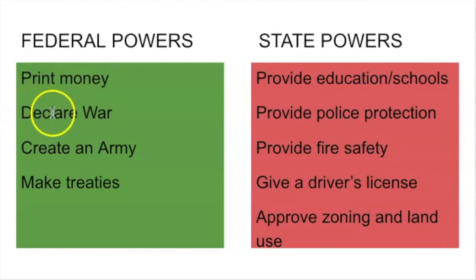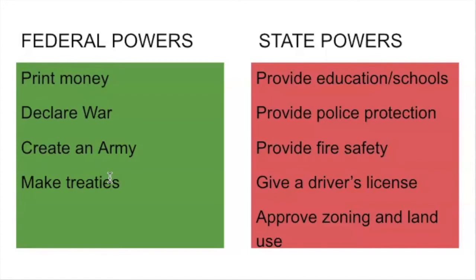The federal government can also declare war, create an army, and make treaties. In international relations — when our country deals with another country — it's important that we do it at a national level. We don't want a war between Mexico and Chicago, or between Canada and Maryland. We want it to be Canada versus the United States, or Mexico versus the United States. When we deal with other countries, we have one United States, and it's a federal set of powers.